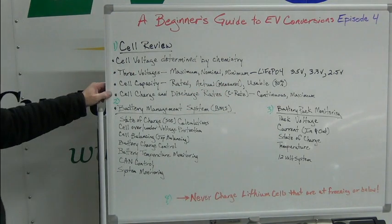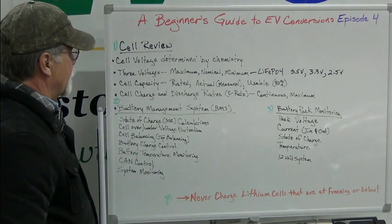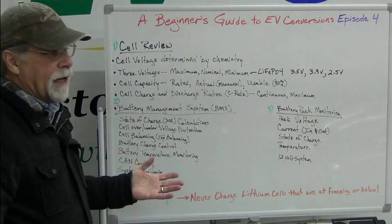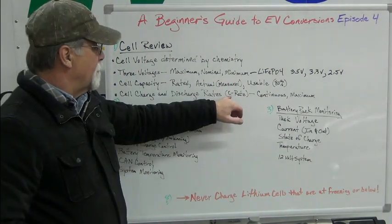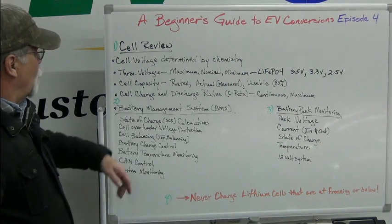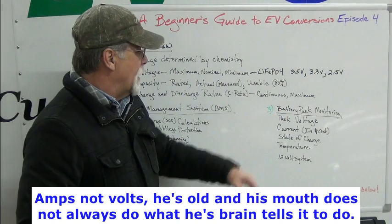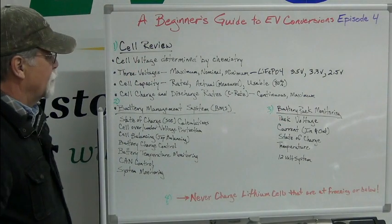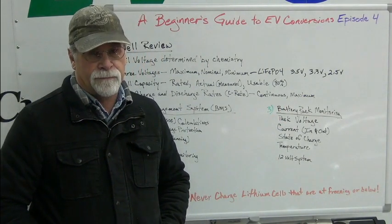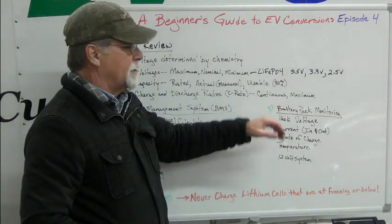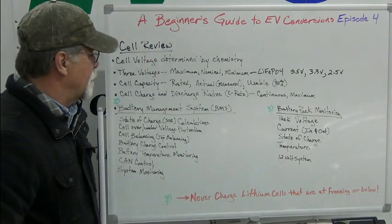Then we have the cell charge and discharge rates, sometimes referred to as the C rate. Whatever that C rate is — whether it's 1, 2, 3, 10, whatever — C stands for capacity. That means it's going to be one times, or three times, that rated capacity. These rates are typically rated as either continuous or maximum. So you can discharge or charge at a continuous rate of 3C, or you have a maximum of 5C, that type of thing.